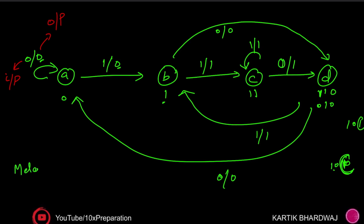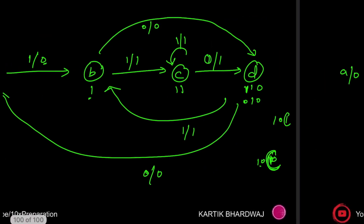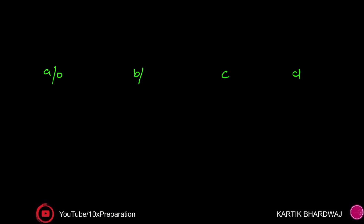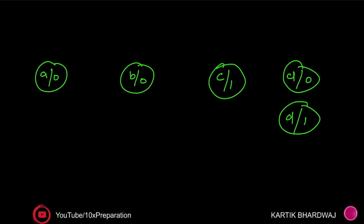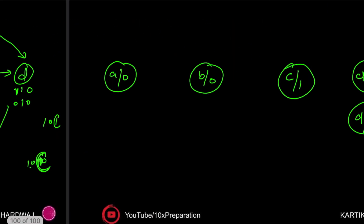In this way you can form the Mealy machine. To convert this entire Mealy machine into the Moore machine, you have to find the outputs for each state. At state A, output is zero. At state B, output is zero. At state C, output is one. At state D, two outputs are coming — one is one, and another is zero. Since every Moore state must have only one output, we split D into two states: D with output one, and D with output zero.